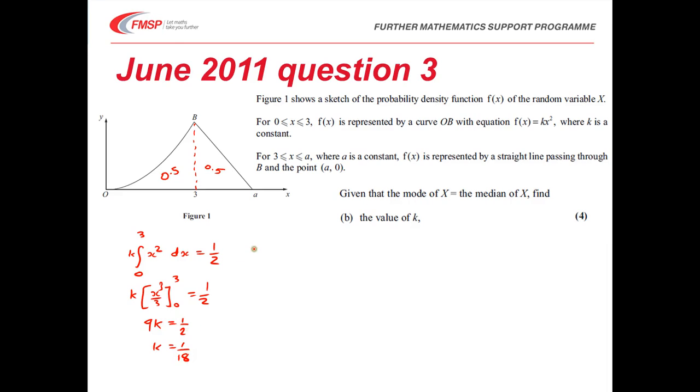So four marks here. You'll get a method mark for setting up the integration, an accuracy mark for setting it to be a half. You'll then get a method mark that's dependent on the first method mark, and an accuracy mark for calculating the value of k.